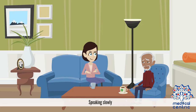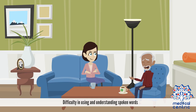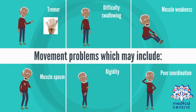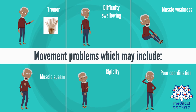Speech problems may include speaking slowly, getting words in the wrong order, and difficulty using and understanding spoken words. Movement problems may include tremor, difficulty swallowing, muscle weakness, muscle spasm, rigidity, and poor coordination.